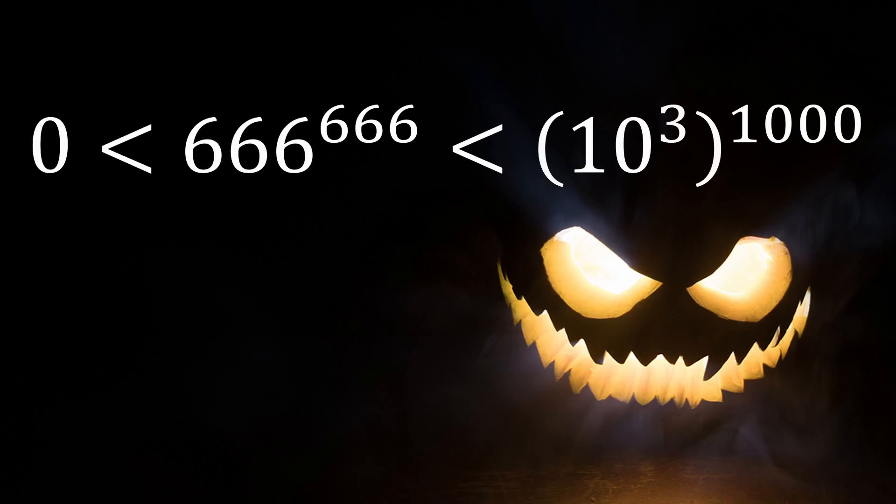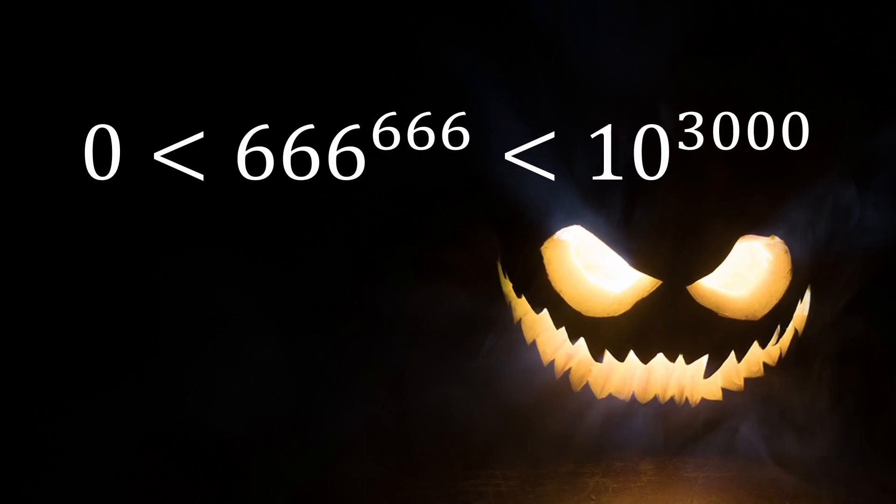Next we will rewrite 1000 as 10 cubed. And this becomes 10 to the 3000th power, a number with 3001 digits.